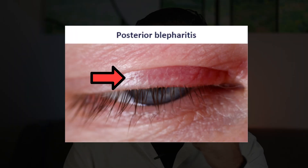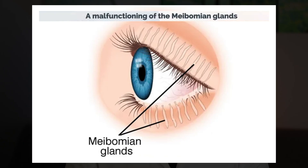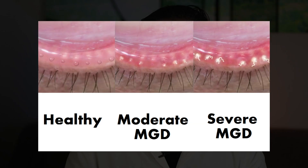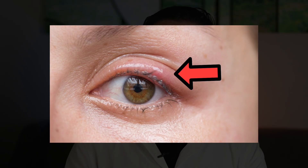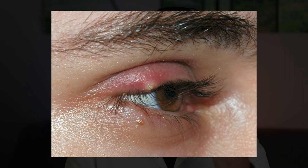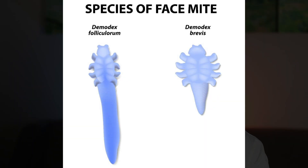Then there is posterior blepharitis. This type affects the inner part of the eyelid and is linked to issues with the oil glands in the eyelids, called the meibomian glands, which can lead to dry eyes. It's linked to meibomian gland dysfunction, where the glands over-secrete an oily substance, leading to clogging and engorgement, and is more common in those who also have rosacea and recurrent styes. Both the anterior and posterior forms of blepharitis can be associated with Demodex folliculorum and Demodex brevis infestations — the face mites — and both share a lot of the same symptoms.